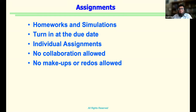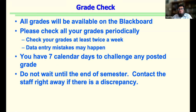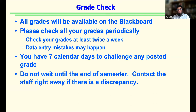Whenever a grade is posted, within seven calendar days talk to me or the TA to tell us what needs to be corrected — there can be data entry errors. You don't have to wait for class to meet; just send an email when you see something is not right. Please don't wait till the end of the semester. I've had students say there was something from week one that needed correction — by then it's too late.